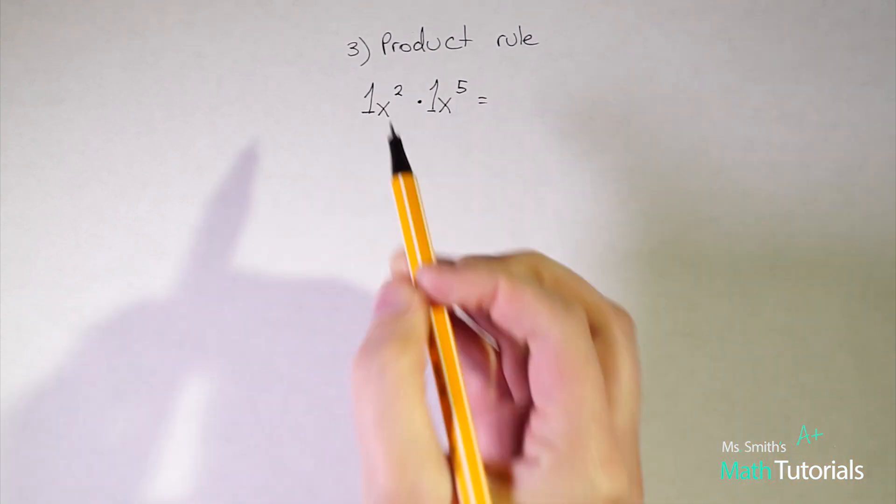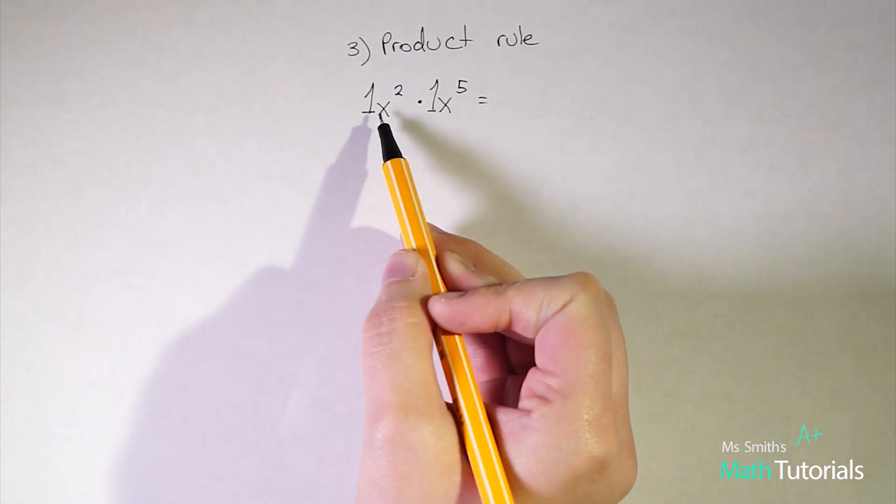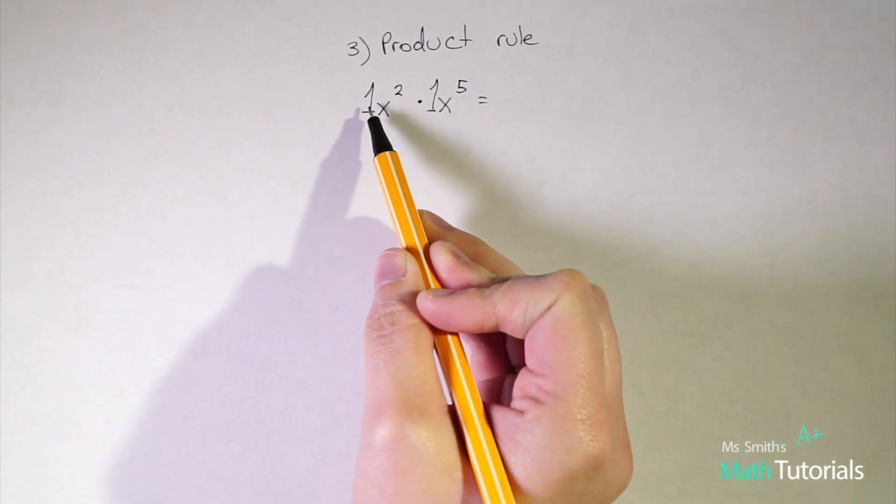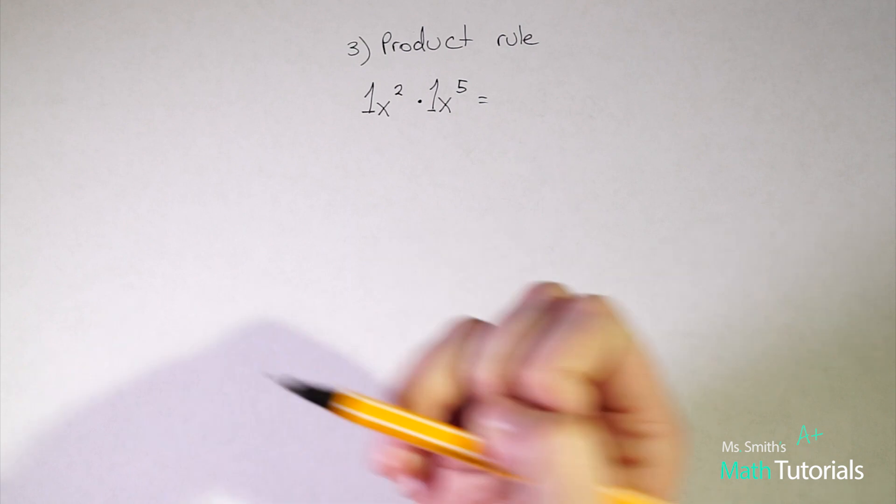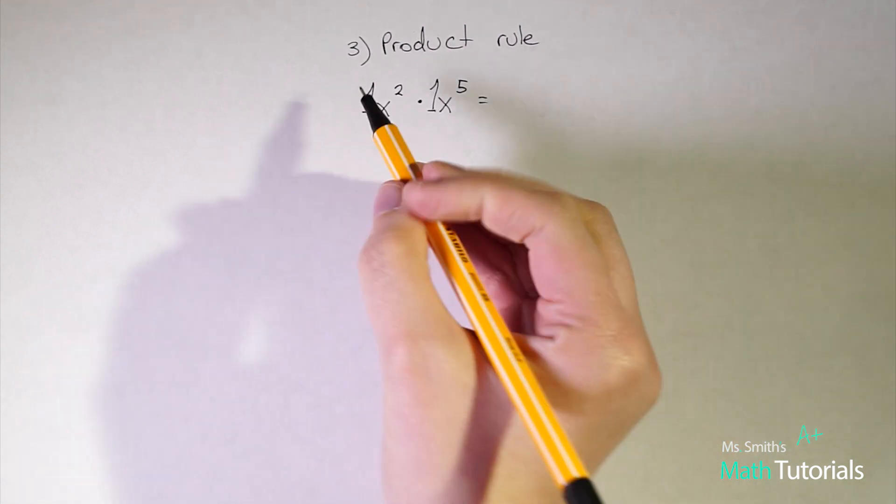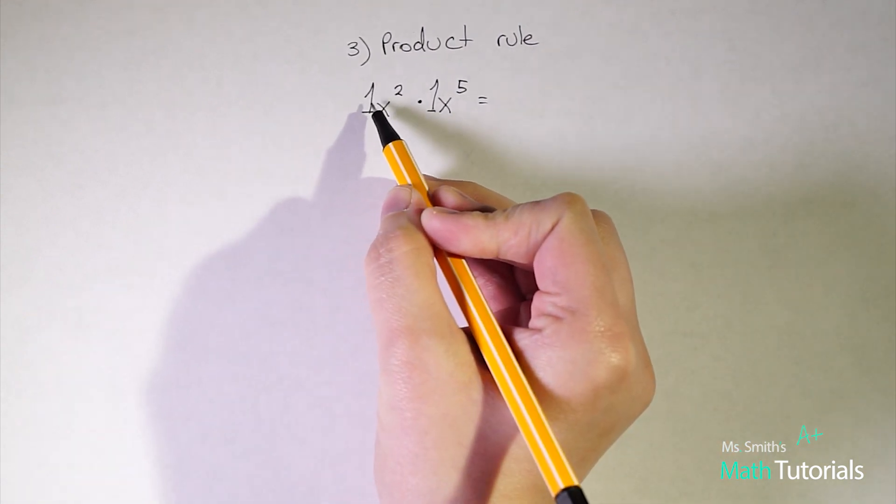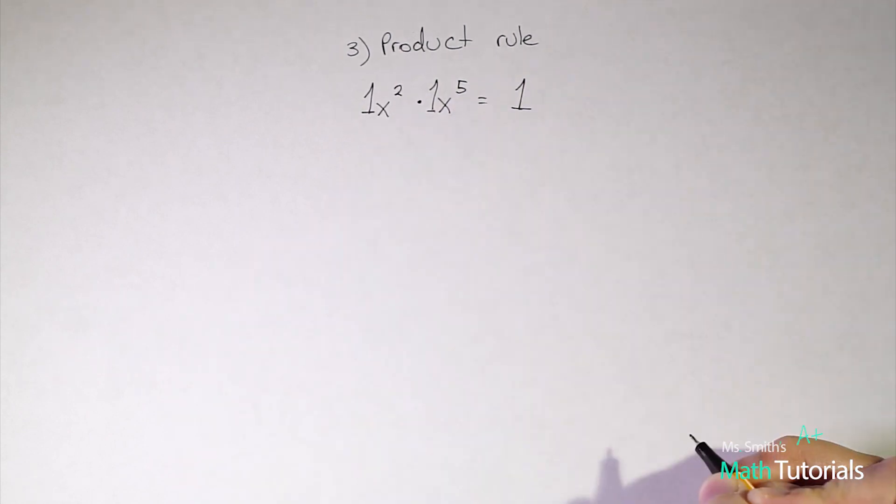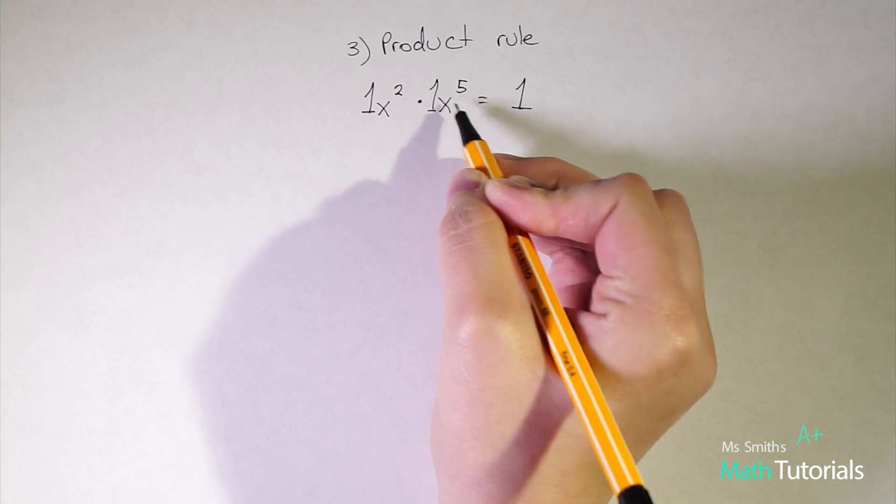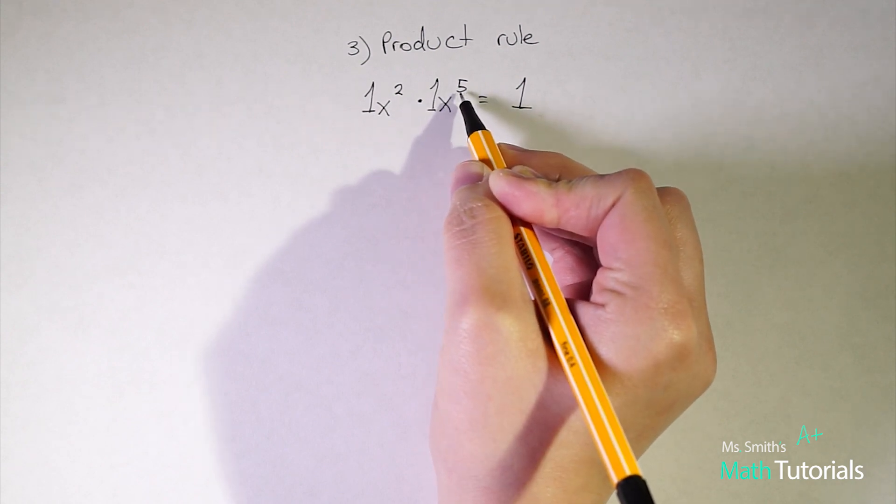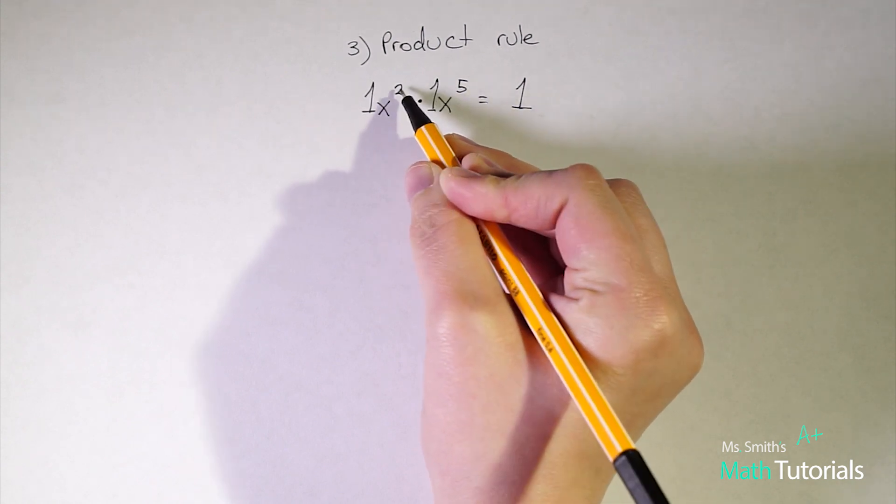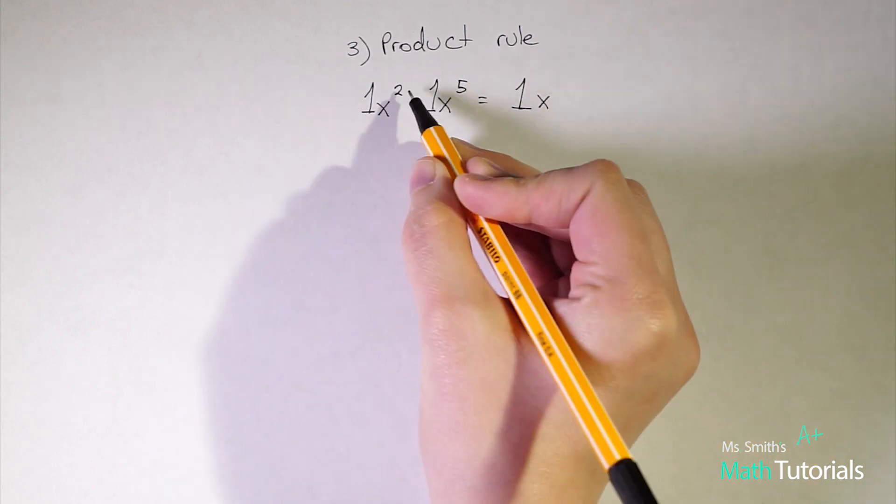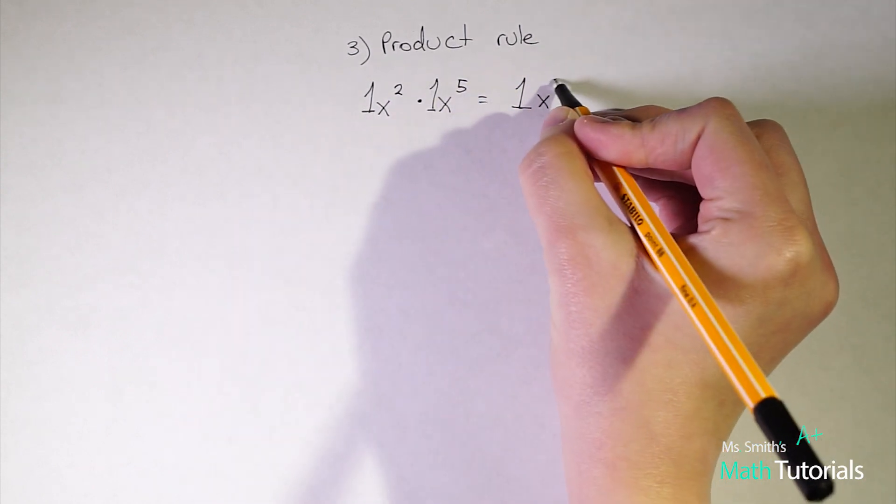Now you'll notice in this that we are just straight multiplying across. We've got like bases because we have an x and an x. We've got a whole number and a whole number, so we can go ahead and combine these. So we'll just start with our first term. One times one is one. We've got x squared being multiplied by x to the fifth. So when we are just straight multiplying, we add these exponents. So it would be x to the two plus five is seven.